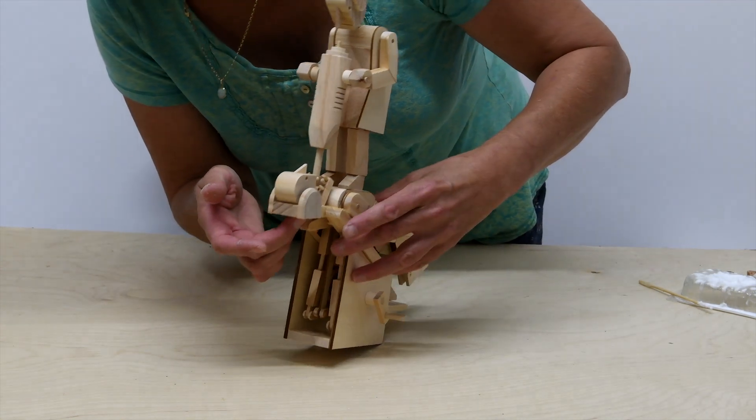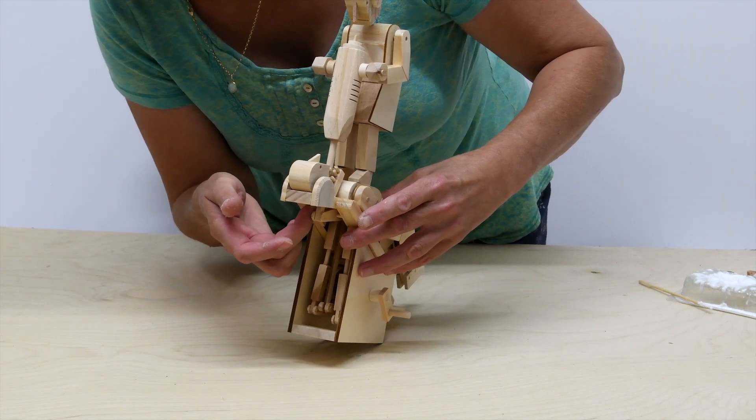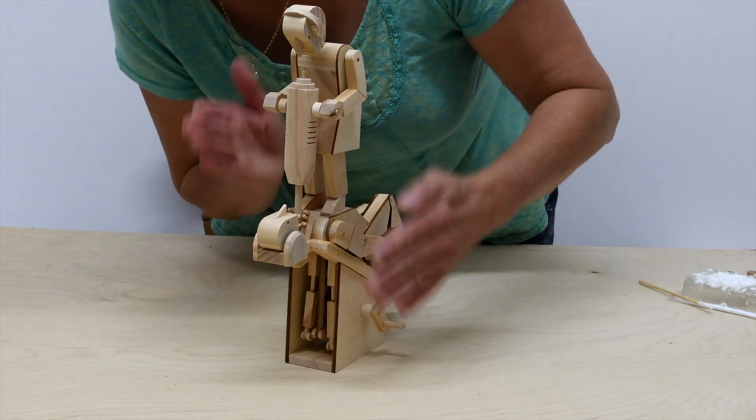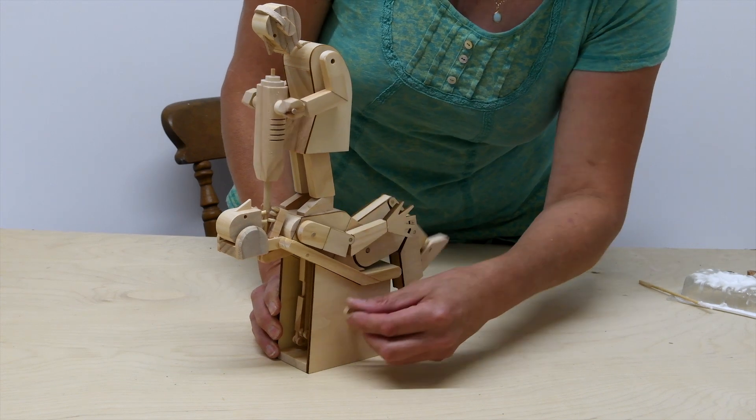And sometimes this piece here can catch as it goes up in that groove again. You have waxed and rounded that off already but you might need to do it some more. Just keep working on it until everything is gliding freely. And then it should look like this.